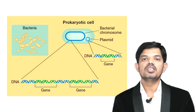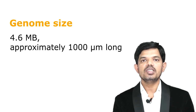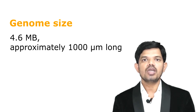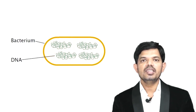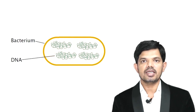The genome size of E. coli bacteria is approximately 4.6 MB and this DNA is approximately 1000 mm long. This bacteria may contain up to 4 identical copies of the chromosome, and the number of copies depends on the species and growth conditions of the bacteria.